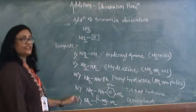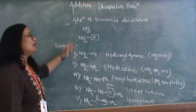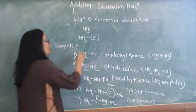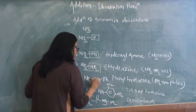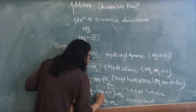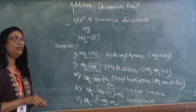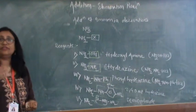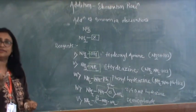So all these reagents, we would call them as ammonia derivatives. What you can see is one is OH, one is NH2, one is NHPh, one is NHCONH2. All these compounds form various types of derivatives with carbonyl compounds, that is with aldehydes or ketones.